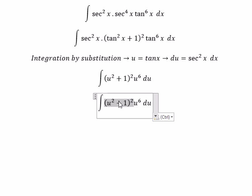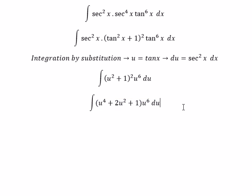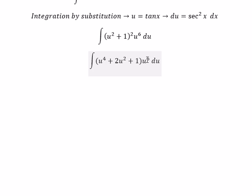For this one we can put about (u² + 1)² · u⁶, which gives us the integral of u⁴ + 2u² + 1 times u⁶.